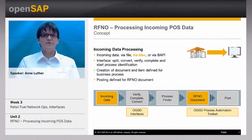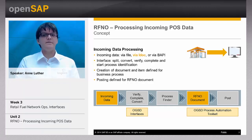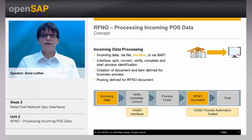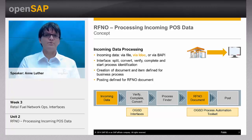On this slide you see the concept of the incoming data processing. There are several ways to receive data from the service station sales terminals: via file, via IDOC, or via direct call. The process finder determines which kind of business transaction it is. The business transaction creates new or aggregated items in an RFNO document. After all data are collected, completed, and verified, the document can be released and posted by running the customizing process rules.